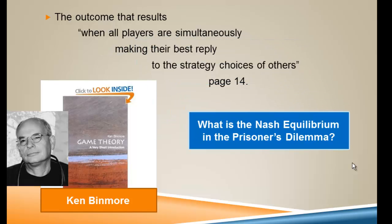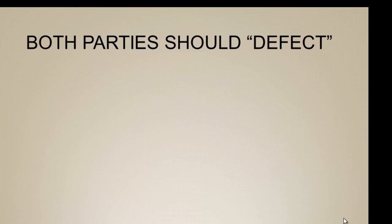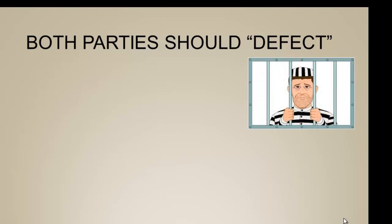So what is the Nash equilibrium in the prisoner's dilemma? Well, both parties should defect. They should always hold their card. They should always refuse to cooperate.